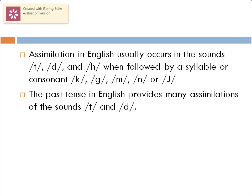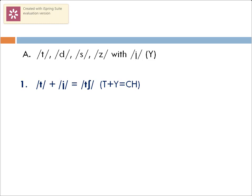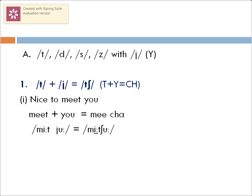Now we'll look into the category where the sounds /t/ and /d/ are assimilating with the sound /j/. When the sound /t/ is joined or combined with the sound /j/, we get a new sound /tʃ/ — that's what we observed in the previous example. So in 'meet you,' the sound /t/ is influenced by the next sound /j/ and 'meet you' becomes 'meetcha.'